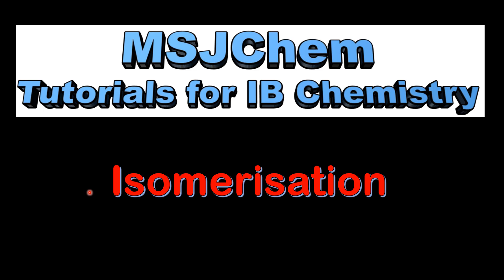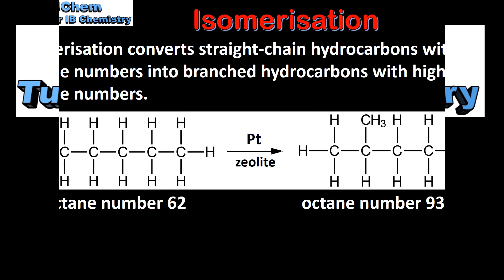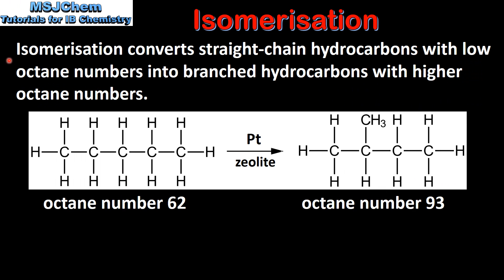This is MSJChem. In this video I'll be looking at isomerization. Isomerization converts straight-chain hydrocarbons with low octane numbers into branched hydrocarbons with higher octane numbers.